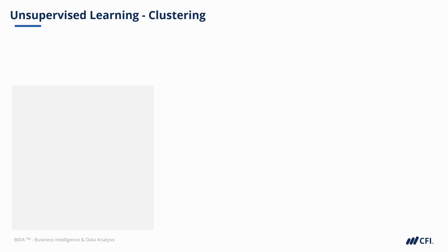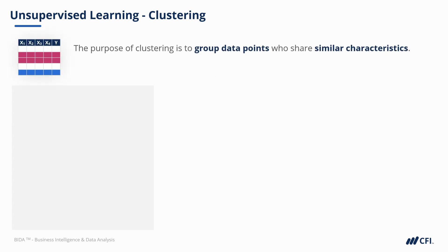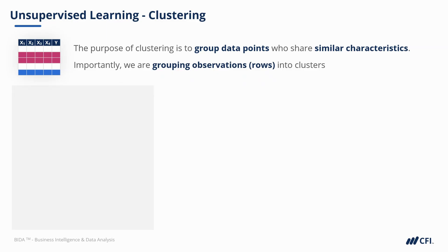In earlier chapters we covered supervised learning, and so here we're going to cover two of the most common use cases for unsupervised learning. First let's tackle clustering. Clustering is where we group data points who share similar characteristics — really grouping observations or rows into clusters.